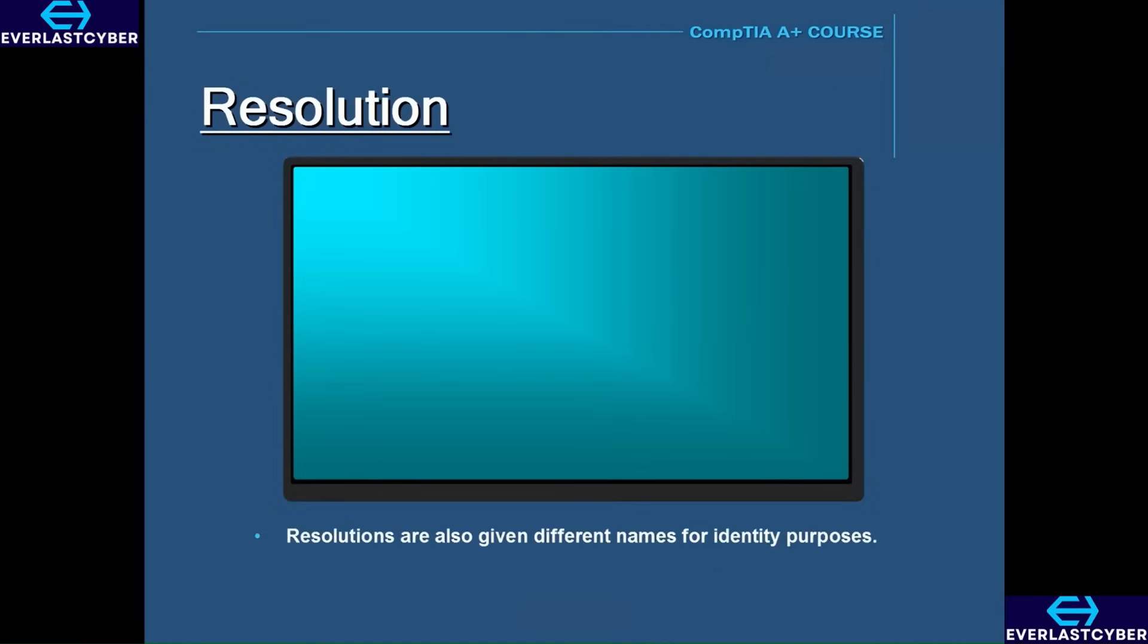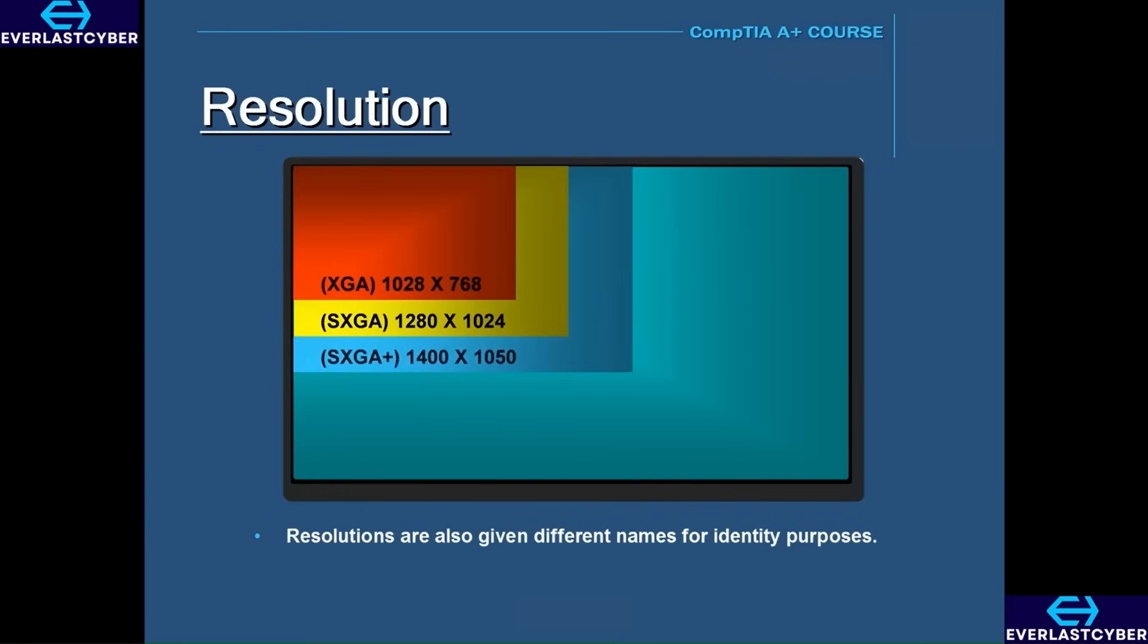Resolutions are also given different names for identity purposes. For example, XGA stands for Extended Graphics Array, this has a resolution of 1024 by 768. SXGA stands for Super Extended Graphics Array, and it has a resolution of 1280 by 1024. SXGA plus stands for Super Extended Graphics Array plus, this has a resolution of 1400 by 1050. UXGA stands for Ultra Extended Graphics Array with a resolution of 1600 by 1200. And WUXGA stands for Widescreen Ultra Extended Graphics Array, and this has a resolution of 1920 by 1200.